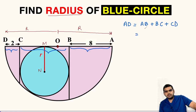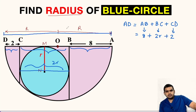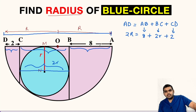We can substitute the value of AB as 8 units — it is given to us. BC will be the diameter of this circle, so this will be 2 times small r. In place of CD we can substitute 2. Also, AD, that means the distance from A to D, is 2 times capital R. So we get: 2R equals 8 plus 2r plus 2.